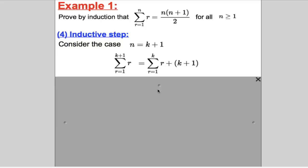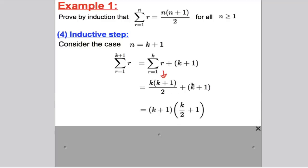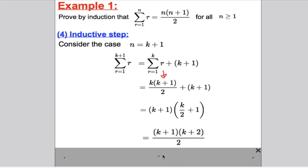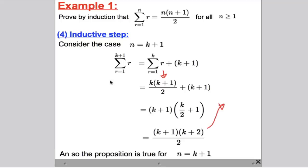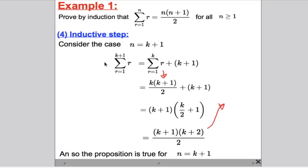By the assumption step, the sum from 1 to k of r equals k(k+1)/2, and we add the term k+1. Factorising the (k+1) from both terms, we get (k+1)(k/2 + 1). Tidying this up and factorising out a half, we get (k+1)(k+2)/2. This is exactly what we were trying to show — the sum equals (k+1)(k+2)/2 — so the proposition is true for n = k+1.